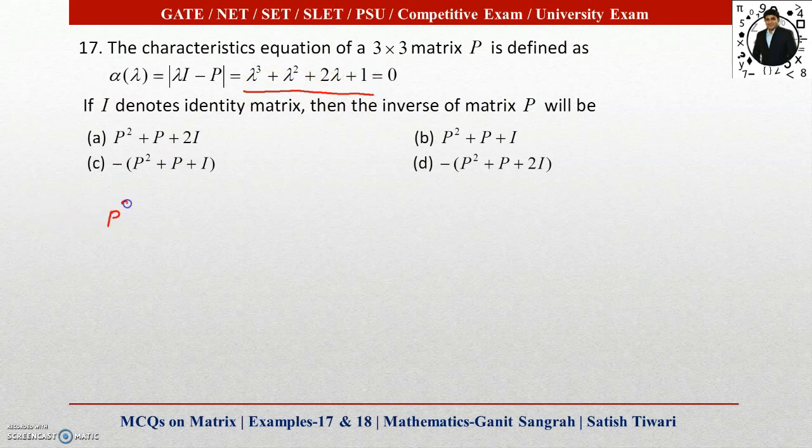We get P³ + P² + 2P + I equals to the null matrix 0. After this, the inverse of P is asked to you. Just multiply this whole equation by P inverse. We get P inverse P³, that will be P².